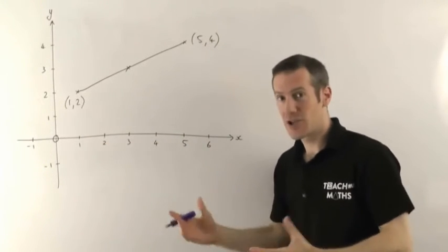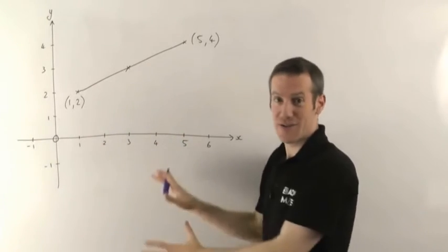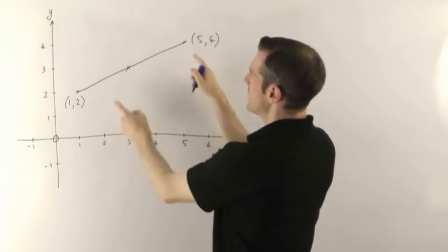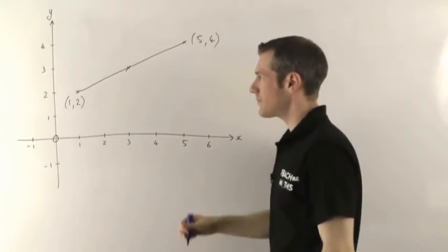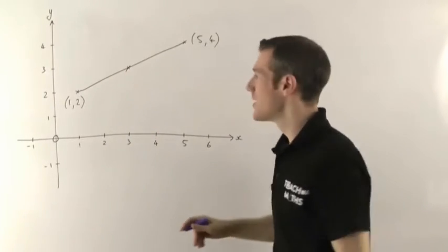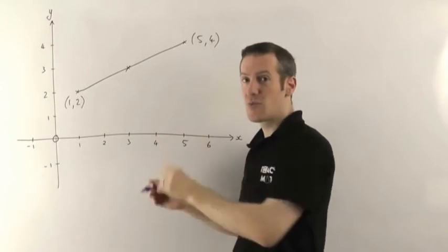Now this method I'm going to show you works for any pair of points anywhere at all on a set of axes like this, so it doesn't matter. They don't need to be in these particular places. This one's fairly easy, you can probably see what the midpoint is already, but the point is the method I'm going to show you will work for anything.